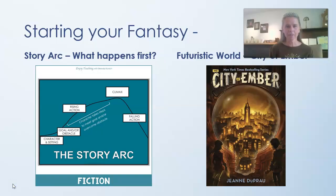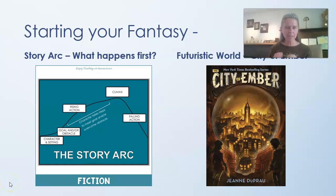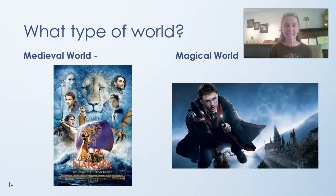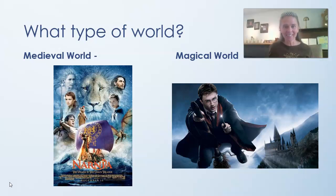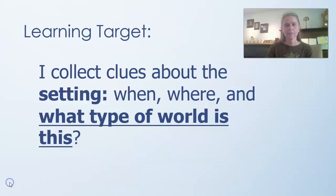At the beginning of a book, you think about characters and setting. What kind of setting is this? It could be a futuristic world where everything seems normal but things are a little different, like City of Ember. Or it could be a medieval world, like swords and knights and princes and princesses. Or it could be a magical world, like Harry Potter. So the first learning target is: I collect clues about the setting — when, where, and what type of world is this?